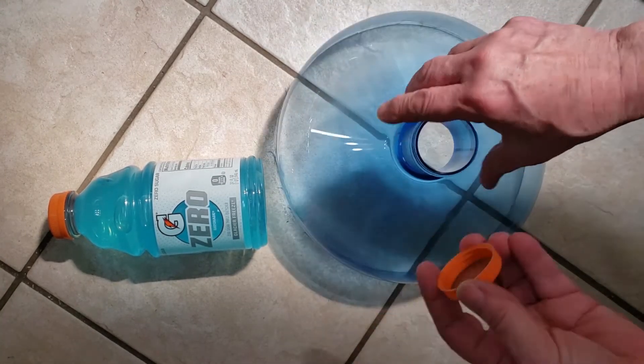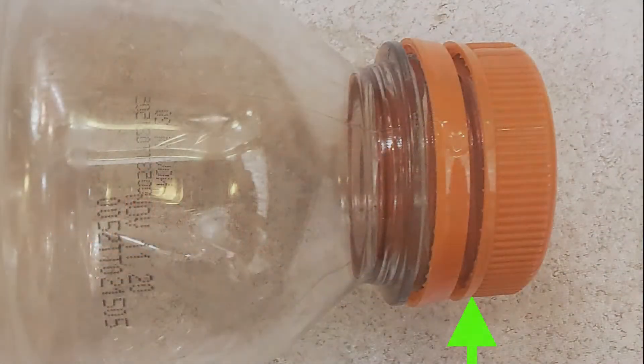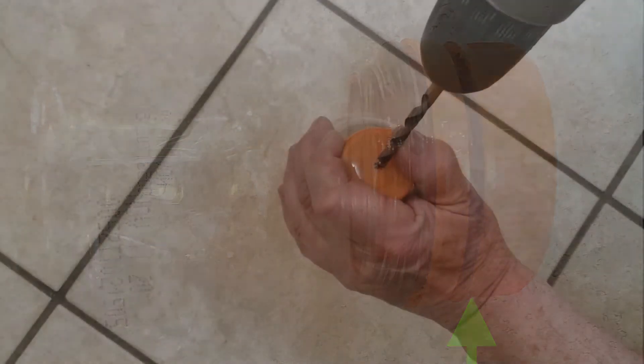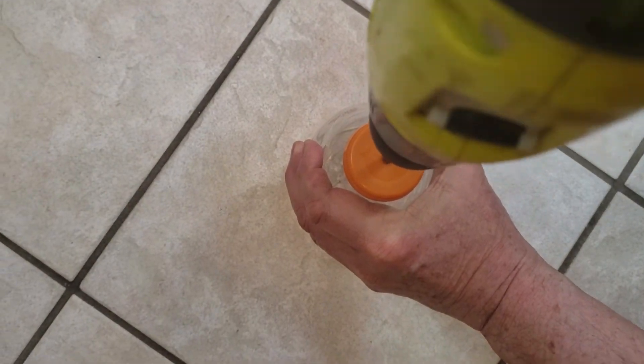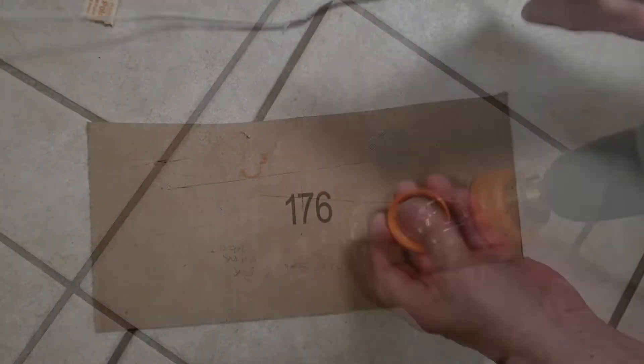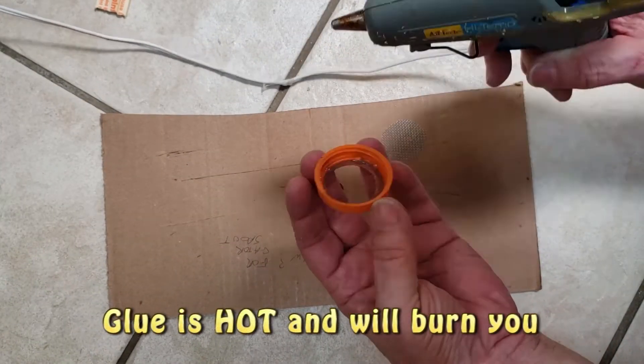If you feel it is too snug, you can sand it or whittle away at the solid part of the rim. Cut out the top of the Gatorade lid. Cut a corresponding circle of metal window screen